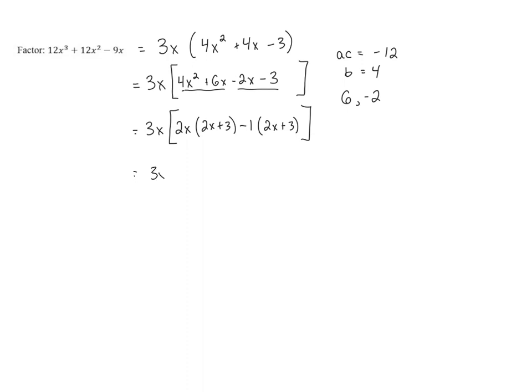So we still have that 3x out front, but now when we finish the grouping, we have 2x plus 3 as the GCF, and that leaves us with leftovers 2x minus 1.